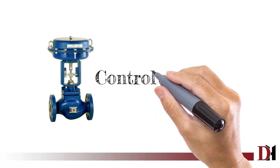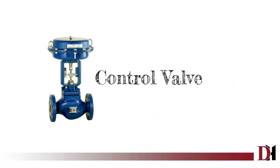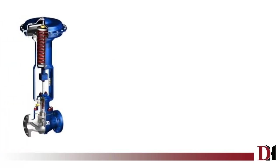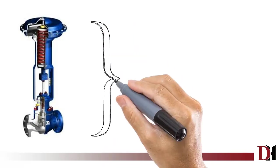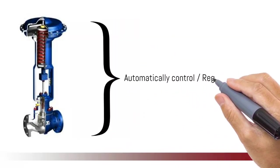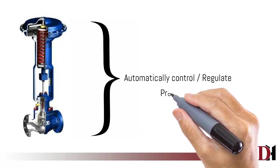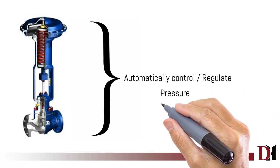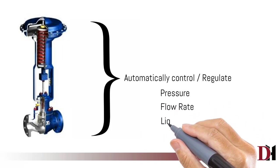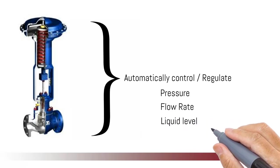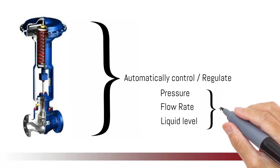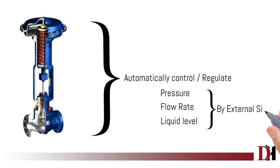Welcome to Design Hub. In this video we will learn about control valves. Control valves are used in the process industry to control the process as per a measured variable. The measured variable can be pressure, liquid level, flow rate, etc., controlled by an external signal.